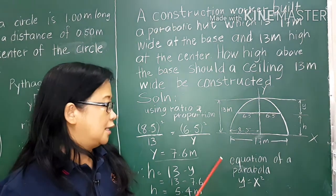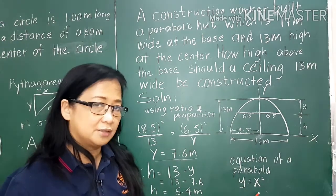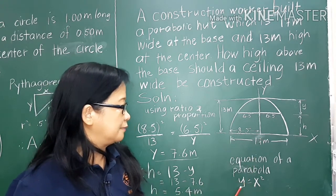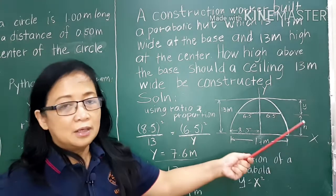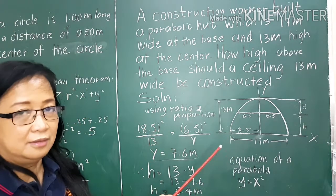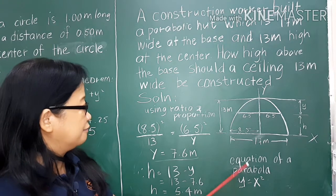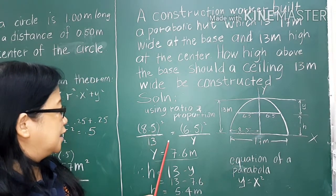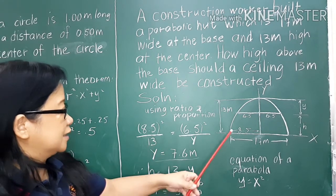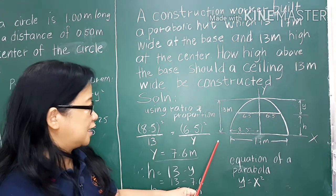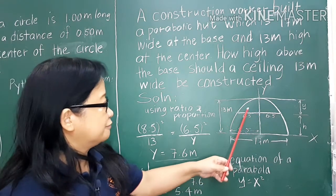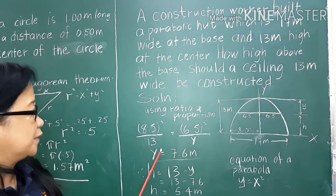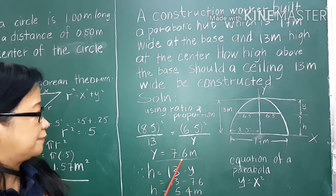According to mathematics, the equation of a simple parabola is y equals x squared. We can solve this problem using ratio and proportion. The half-base 8.5 squared is to the full height 13, as 6.5 squared is to the unknown height y. Using cross multiplication, y equals 7.6 meters.